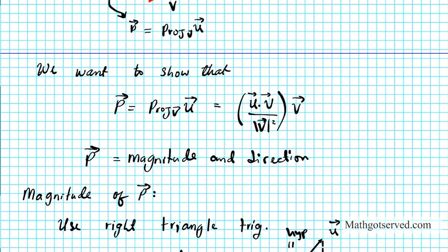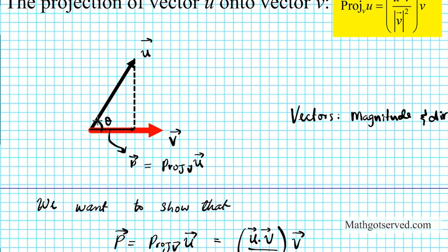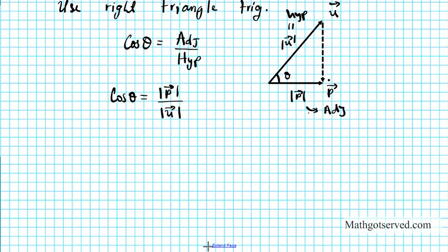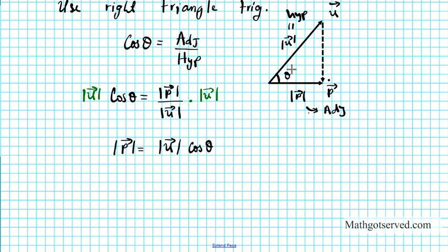See this triangle right here — this is theta, this is the magnitude of vector u, and this length is the magnitude of vector p. So cosine is the connection here because you have the adjacent and the hypotenuse. If I want to isolate vector p, I'll multiply both sides by the magnitude of vector u, and using the reflexive property of equality, I can write this as: the magnitude of vector p equals the magnitude of vector u times cosine theta. This is known as the scalar component of vector u in the direction of vector v. Let's call this formula number one.